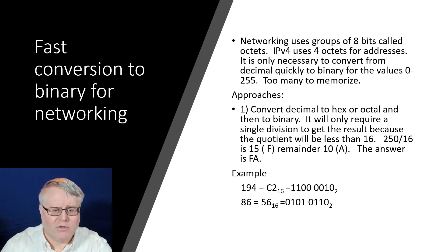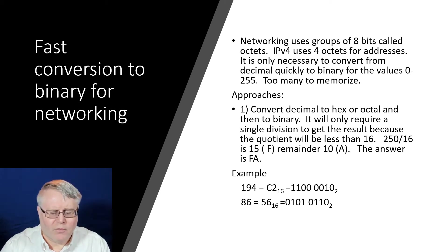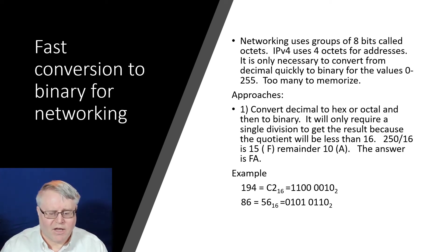You don't need a second division because the quotient will be less than 16 on an 8-bit number — just write down the quotient followed by the remainder. For 194 divided by 16, the answer is C2, and from the table C2 in binary is 11000010. For 86 divided by 16 you get 56, and you just write down those two hex digits and look up their binary values. One simple division and you can write it out in hex, then directly read off the binary.